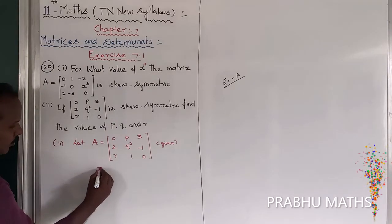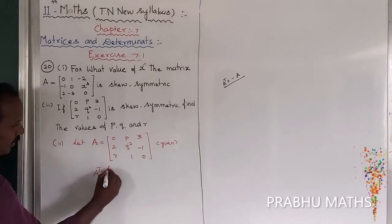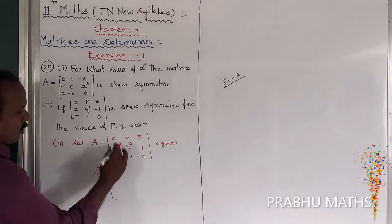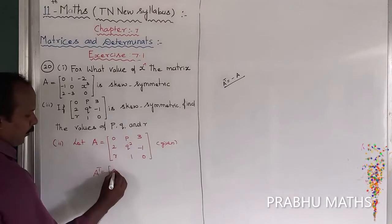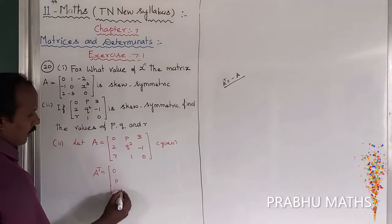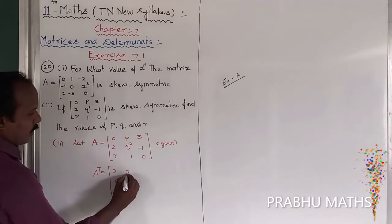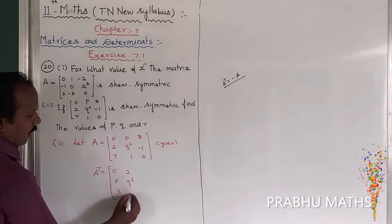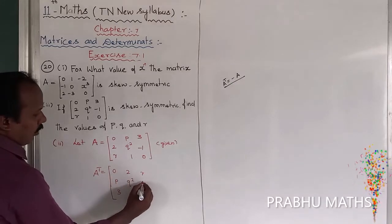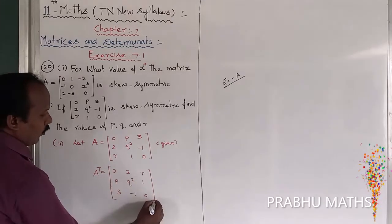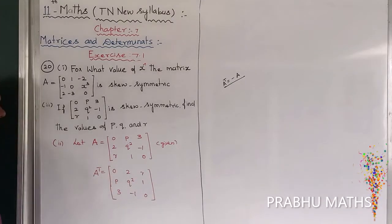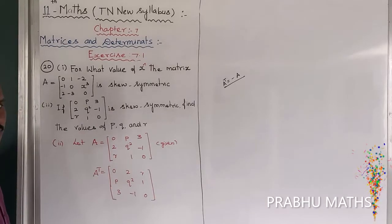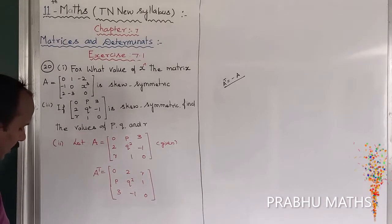Next, find the value of A transpose. A transpose is obtained by interchanging rows and columns. So A transpose equals: first row — 0, 2, r; second row — p, q-square, 1; third row — 3, minus 1, 0.